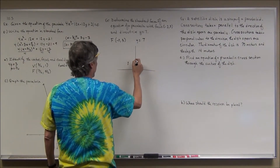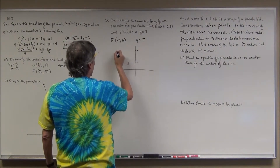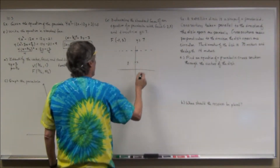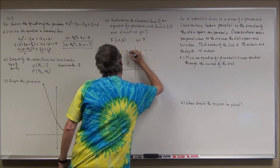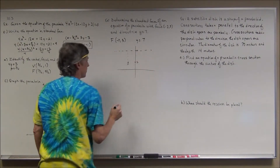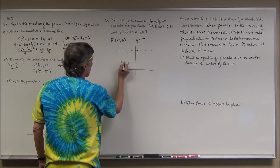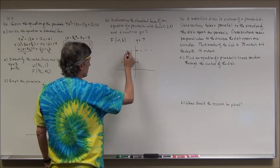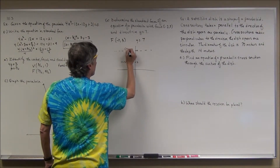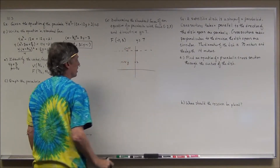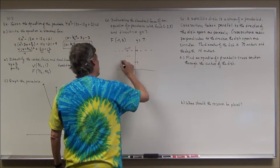Plotting the focus at (negative 2, 3) and the directrix y equals 7, the vertex is going to be exactly halfway between them. The focus is at negative 2, and the corresponding point on the directrix would be (negative 2, 7). From the sketch I can also see the parabola will open downward.